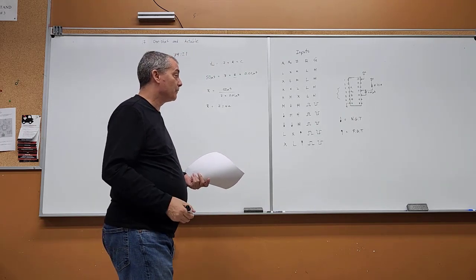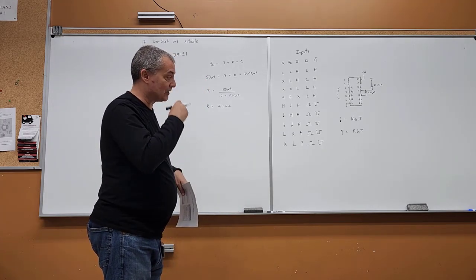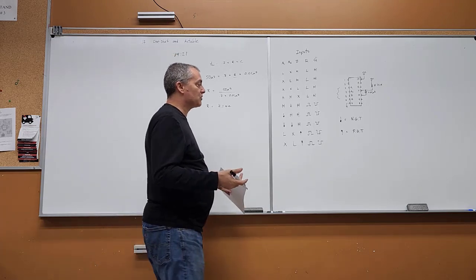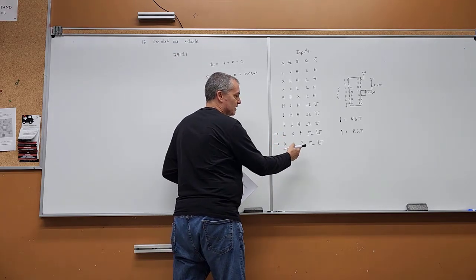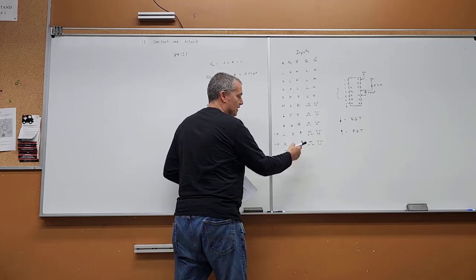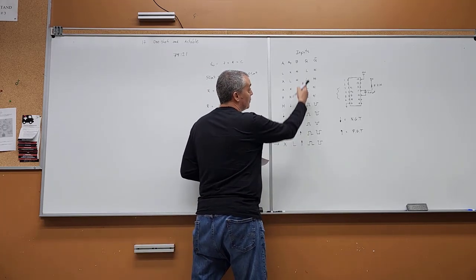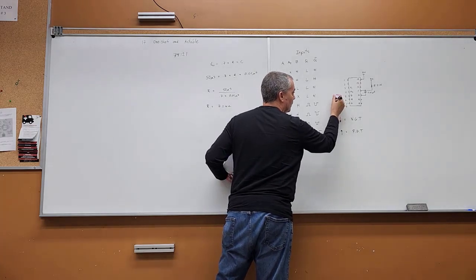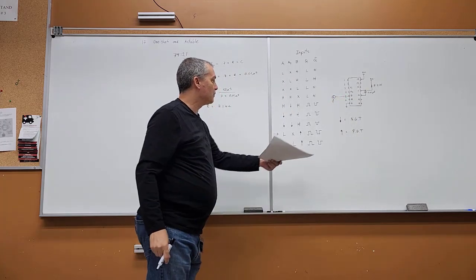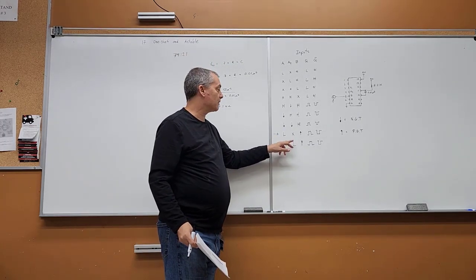The lab says to assume triggering from a leading edge, which is a positive-going transition. You look for the up-arrow rows in the truth table. Since the up arrow is on pin B, your function generator goes to pin 5, which is the B input.